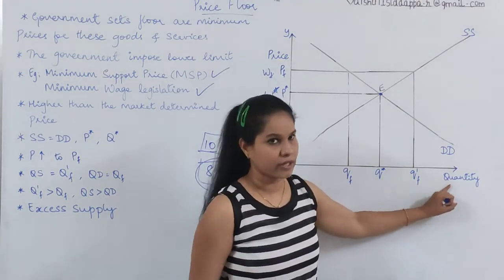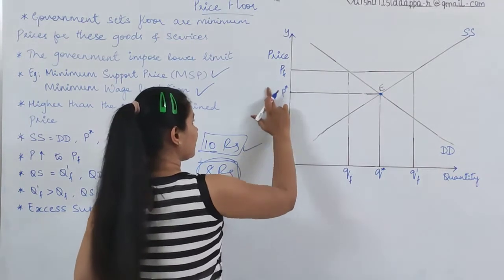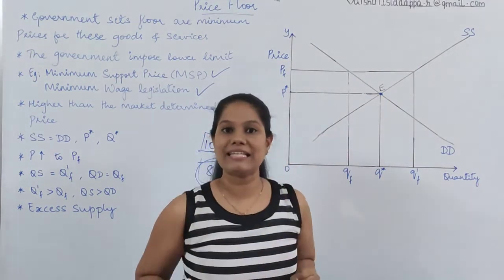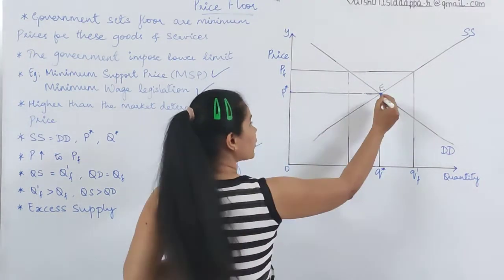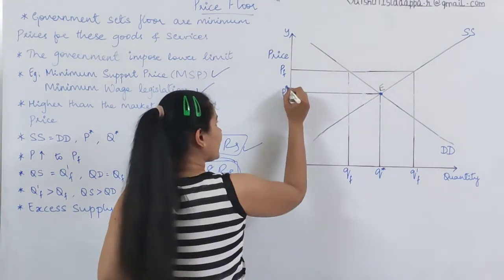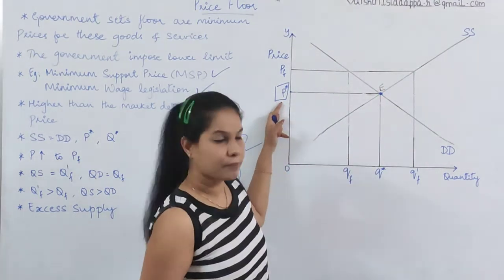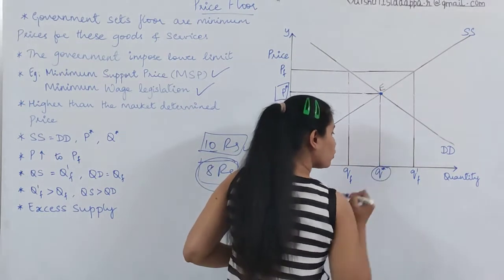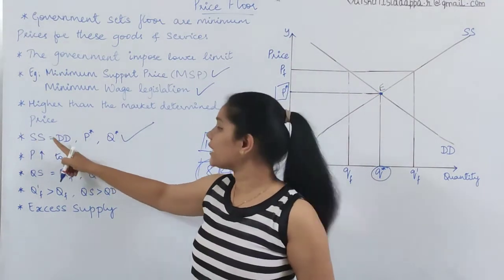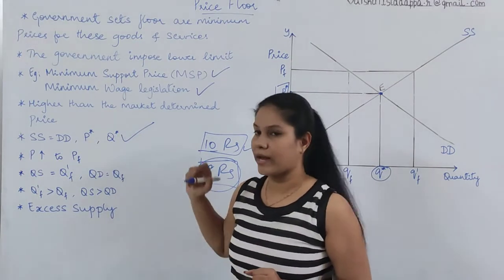On the X-axis, you have quantity and on the Y-axis, you have price. In this, demand and supply are both intersecting at one point — you can see they both are intersecting at one point. That point is called the equilibrium point. The price where they both are equal is called equilibrium price, and the quantity where they both are equal is called equilibrium quantity. Where supply is equal to demand, that's called equilibrium price and equilibrium quantity.